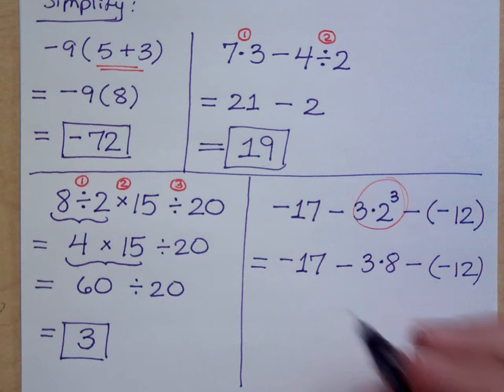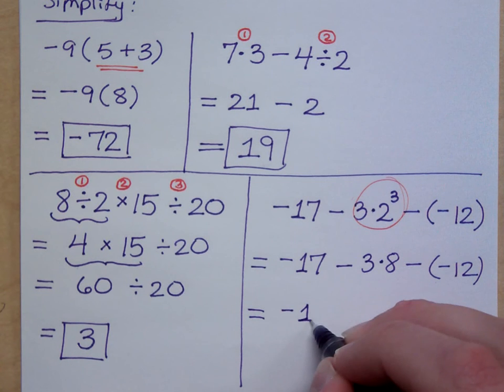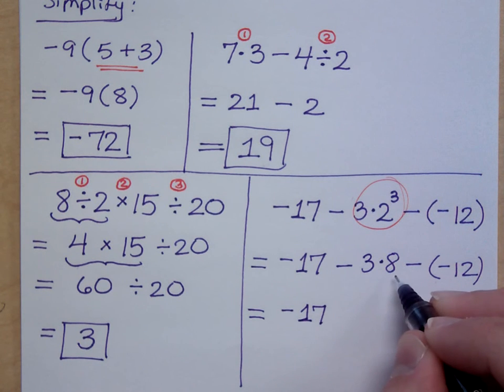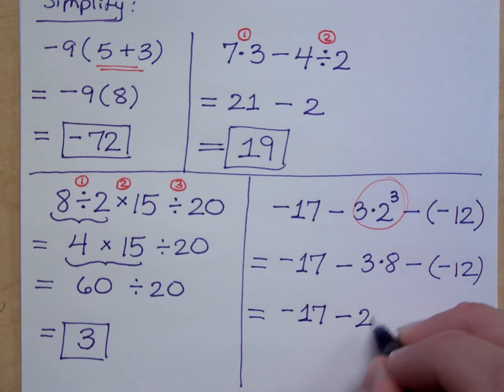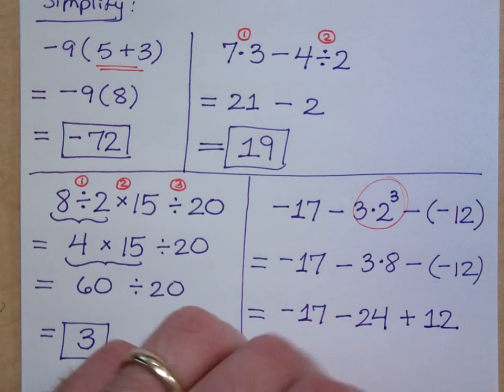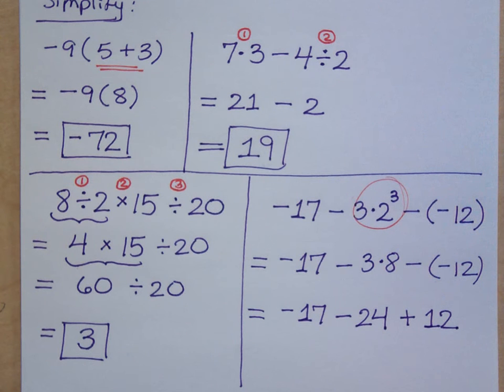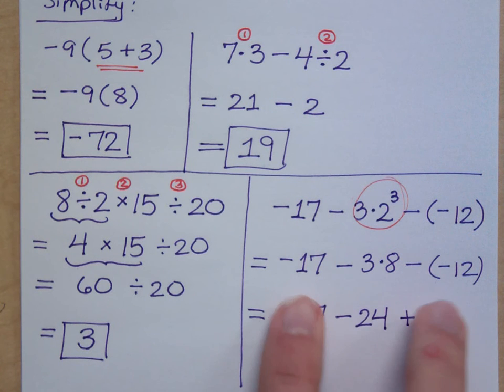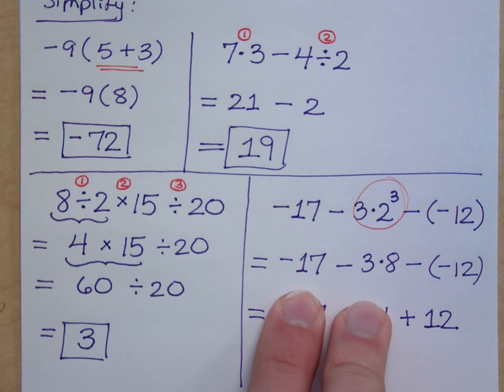So, this is negative 17 minus 3 times 8 minus negative 12. Exponents are done. Multiplication and division from left to right. So, that's just negative 17 minus 3 times 8. That's minus 24. Now, I kind of see this as multiplication. A minus minus 12 is a plus 12. Am I done with multiplication and division? Yes. The last step says add and subtract from left to right. But what we know is that we have the commutative and associative properties of addition, so the order doesn't really matter. I can rearrange this in any order that I want as long as you have a negative 17, a negative 24, and a positive 12 that you're adding together.